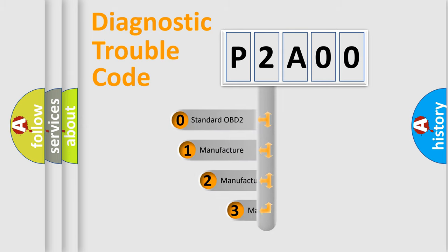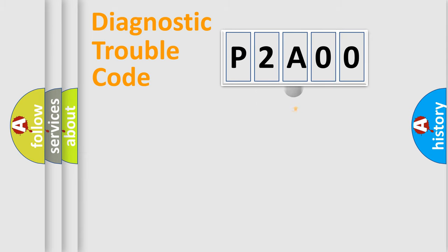If the second character is expressed as zero, it is a standardized error. In the case of numbers 1, 2, 3, it is a more manufacturer-specific expression of the car-specific error.